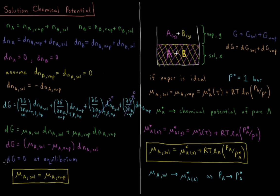At equilibrium in a closed system, dG = 0 for all processes. For that to hold, the chemical potential of A in solution must equal the chemical potential of A in the vapor. All phases must have equal chemical potential; otherwise there is an incentive for moles of A to transfer from one phase to another to minimize the Gibbs energy.